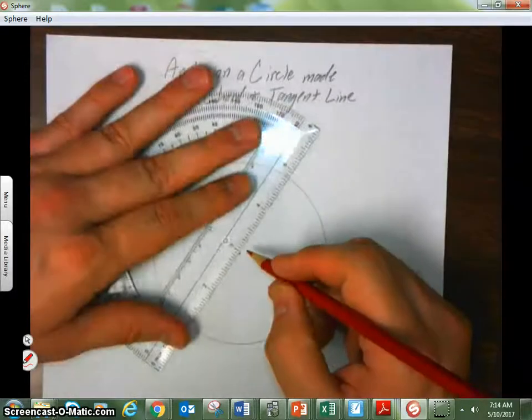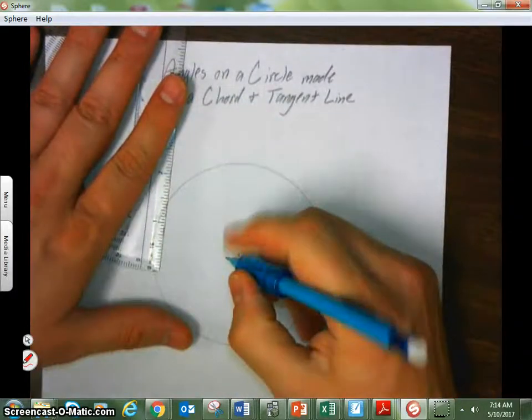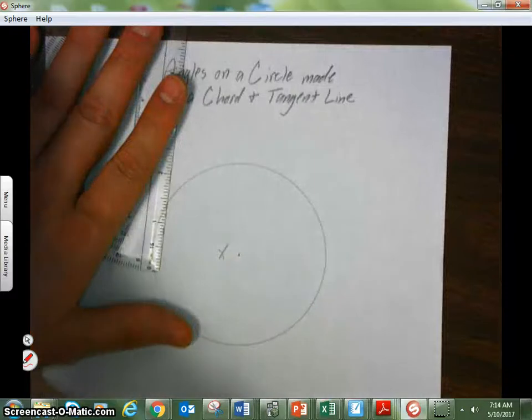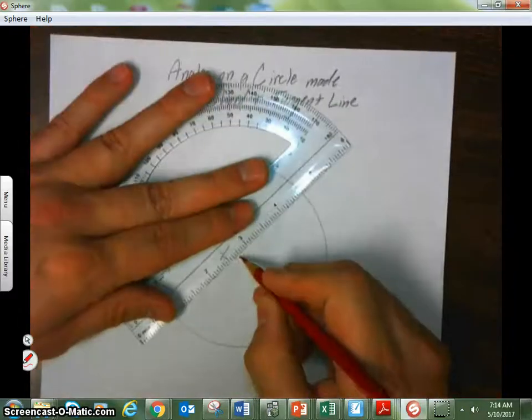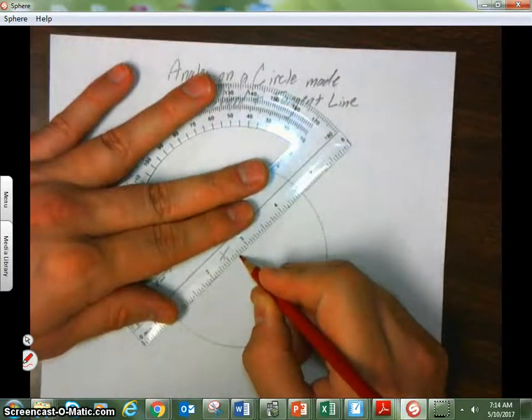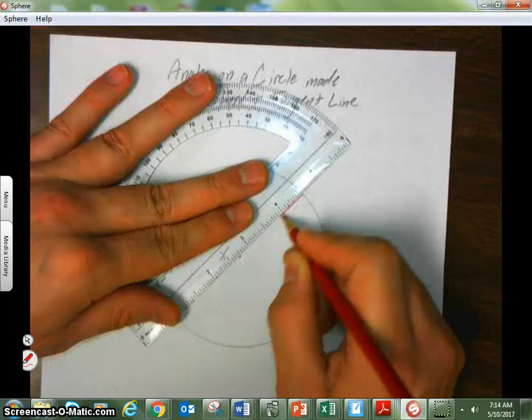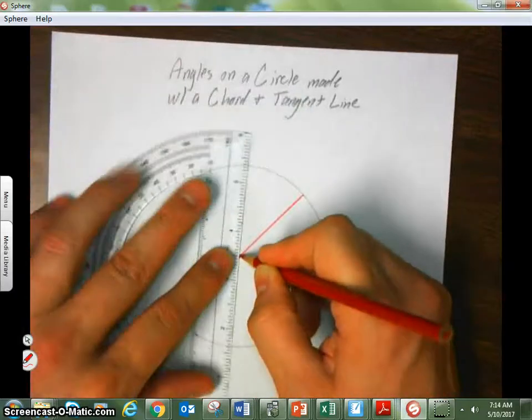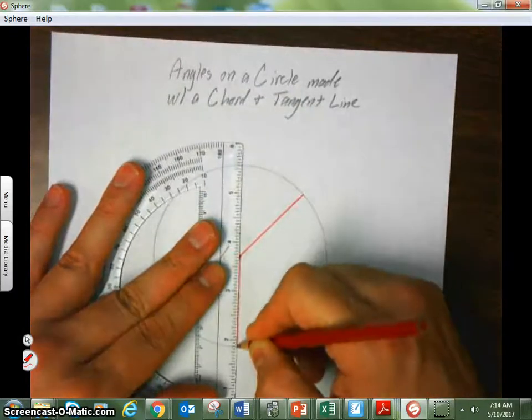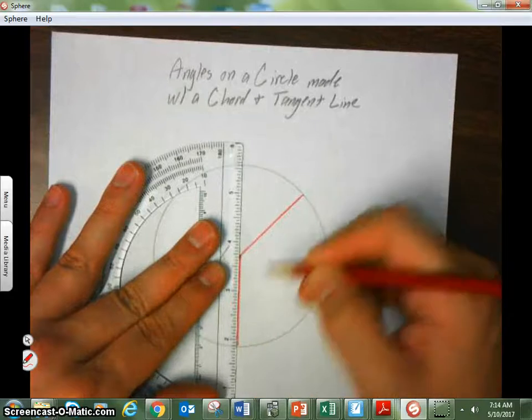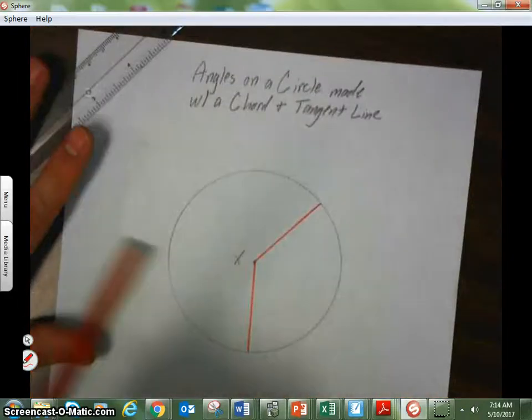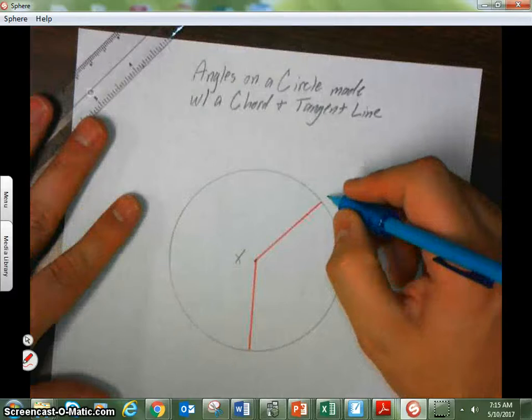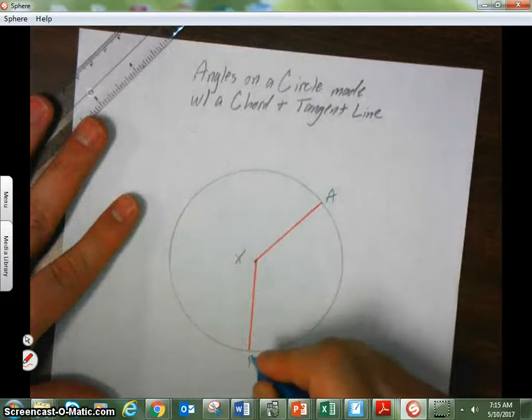First thing I'm going to do on the circle, let's go ahead and call this Circle X, just so we can have a name for it. First thing I'm going to do here really is I want to draw in a central angle. I'm not trying to make it overly big, we just want to have some kind of a central angle here, and here we'll call this point A and B.